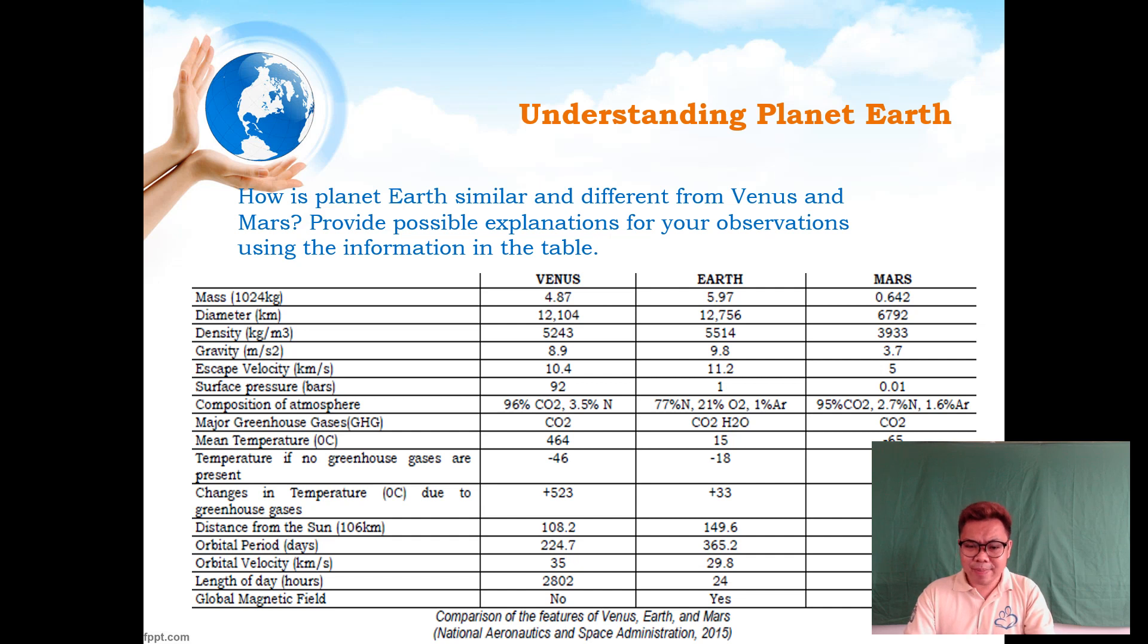In terms of orbital period and orbital velocity, they differ. The length of the day: Earth has 24 hours, unlike Venus which is 2,802 hours. In terms of global magnetic field, the answers are no, no, and yes.